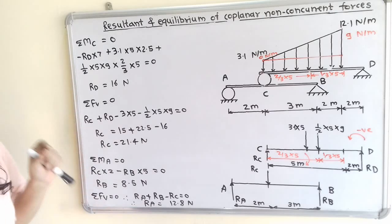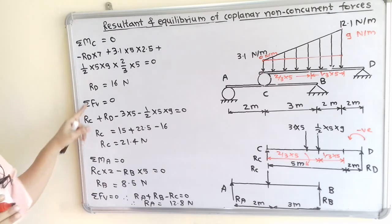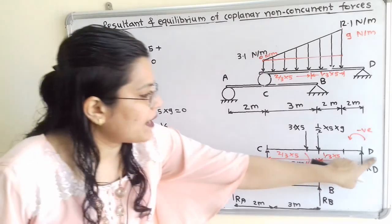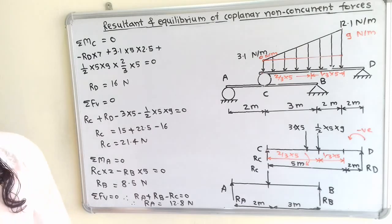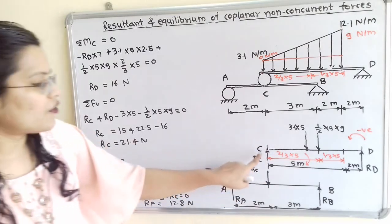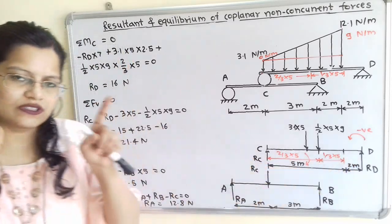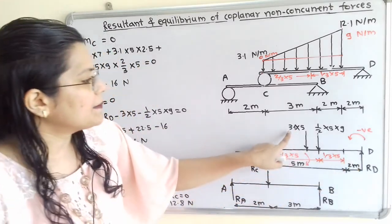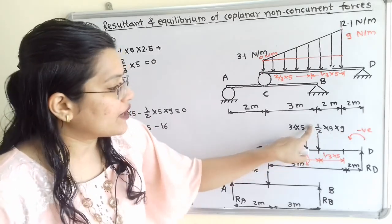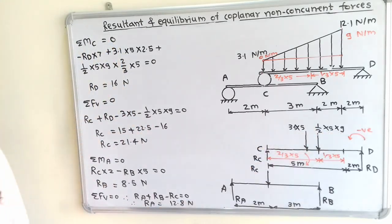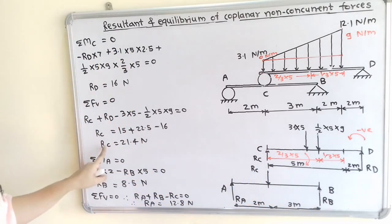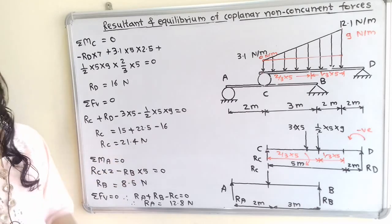Now taking the summation of all vertical forces for beam CD equal to zero: RC + RD − 3.1 × 5 − (1/2 × 5 × 9) = 0. With RD known, the only unknown is RC, giving RC = 21.4 N.